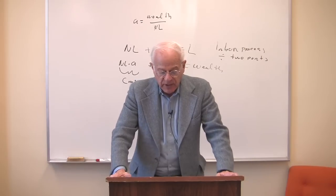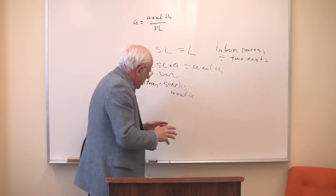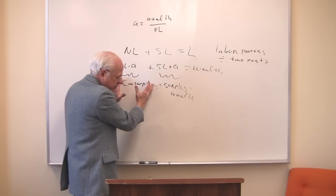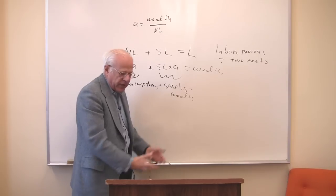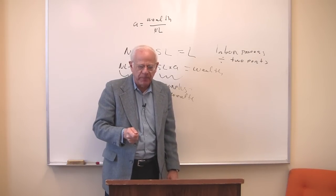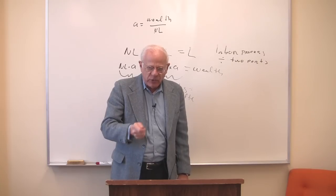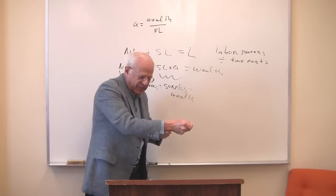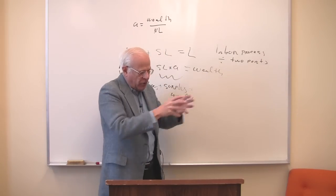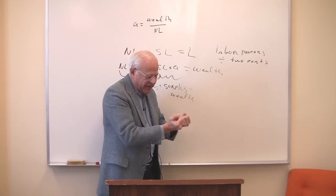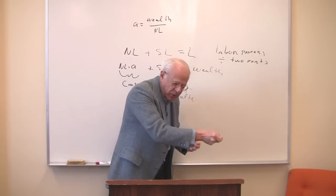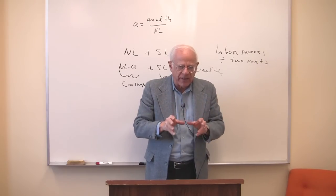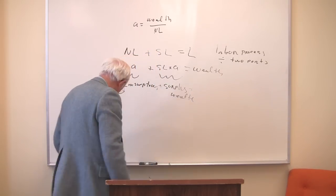In your reading, the production of surplus and the appropriation of the surplus — after consumption — is called the fundamental class process. The distribution of the surplus is called the subsumed class process. The individuals who appropriate the surplus are called the fundamental classes. They take that surplus and distribute it — that's the subsumed class process — to those other individuals called subsumed classes, who provide the conditions of existence of that fundamental class process. Let me put that on the blackboard since that's a lot of words.